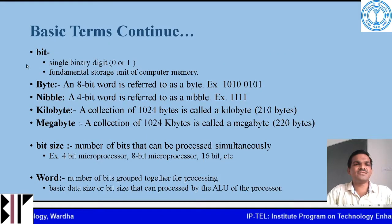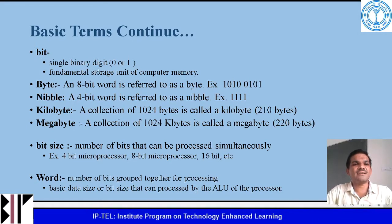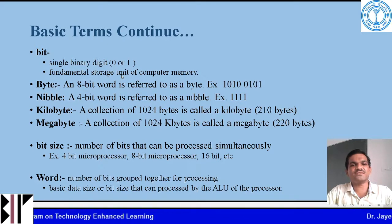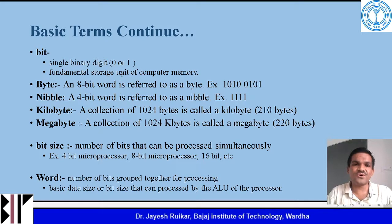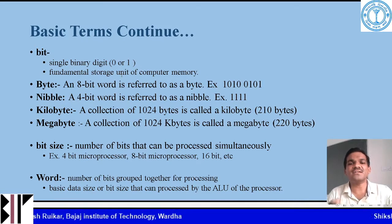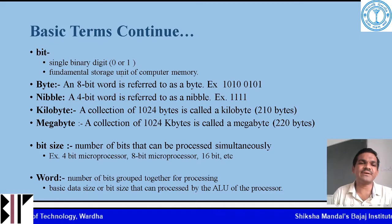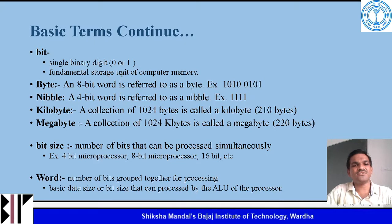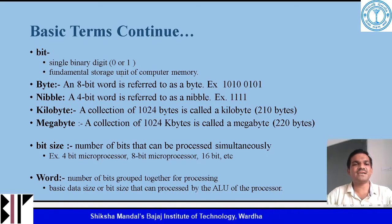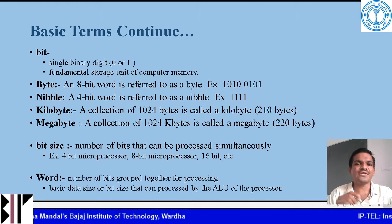The next basic term is bit. A bit is nothing but a single binary digit — it can either be 0 or 1. It is the fundamental unit of storage in a computer system. In contrast, decimal digits can have 10 values from 0 through 9, whereas a bit has only two values: 0 or 1.